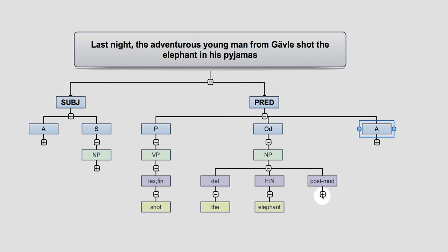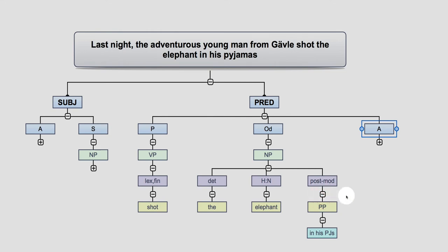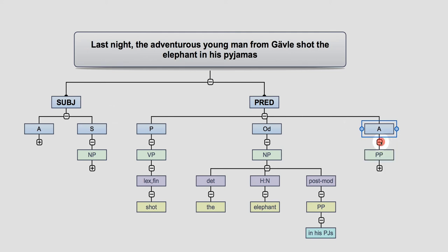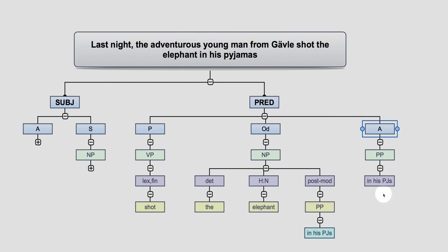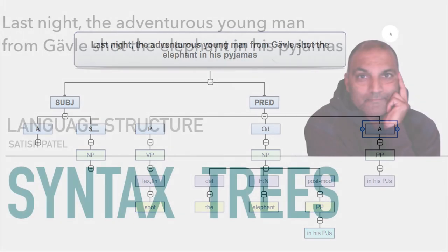Now here's where the ambiguity lies. Is it the elephant that you're post-modifying — 'the elephant in his pyjamas'? Or is it the adverbial? If it's the adverbial, then the adverbial is referring to the subject that's wearing the pyjamas — 'in his pyjamas' here. So either you have it in this position as a post-modifier, or as an adverbial. By having both, you're showing the ambiguity involved in this particular sentence.